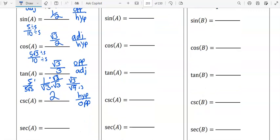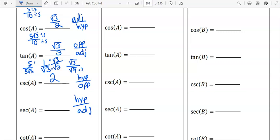Secant is the reciprocal of cosine. So that's hypotenuse over adjacent. 2 over square root of 3. Rationalize it. You get 2 square root of 3 over 3.